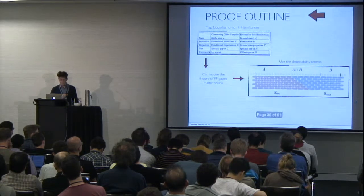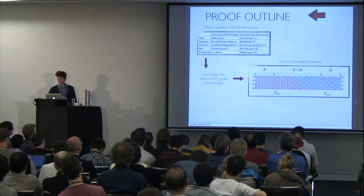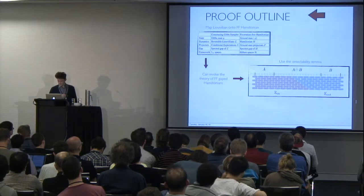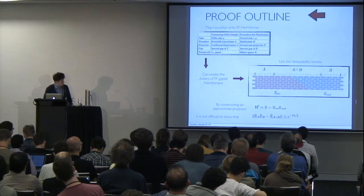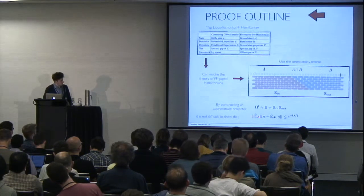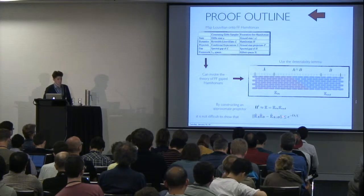And it turns out that the right tool in this setting has already been developed, which is called the detectability lemma. And using this tool, you can quite easily get to an estimate on the projection onto system A and projection onto system B compared to the projection on AUB.